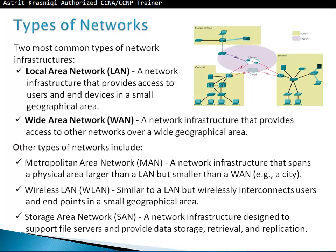Three other network types to know: MAN (Metropolitan Area Network) — larger than a LAN but smaller than a WAN, such as a university campus. WLAN (Wireless LAN) — same as a LAN but wireless. SAN (Storage Area Network) — designed to support file servers and provide data storage, retrieval, and replication. SANs deal with massive storage: terabytes, petabytes of hard disks, and LANs or WANs connect to them via fast connections like fiber optic.